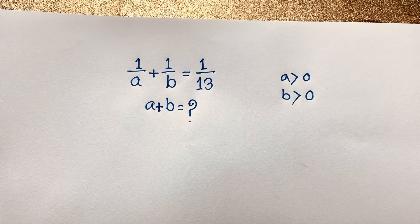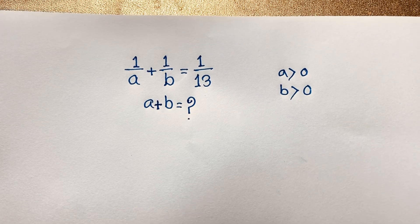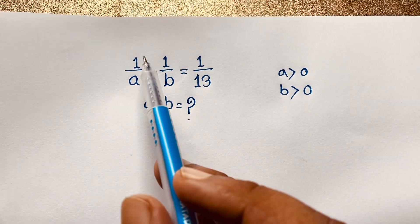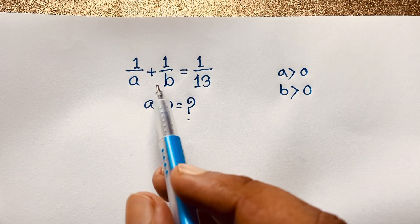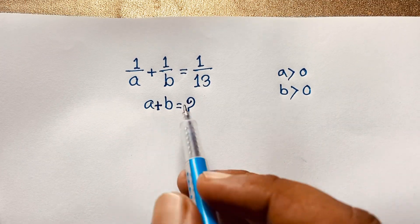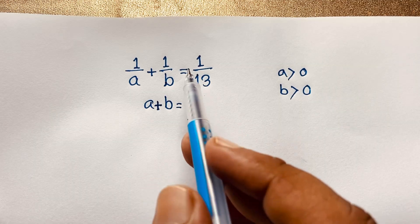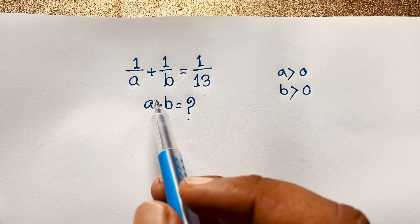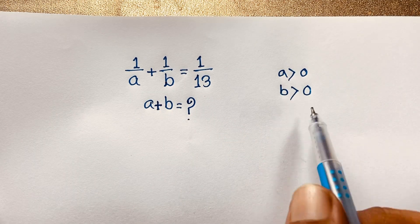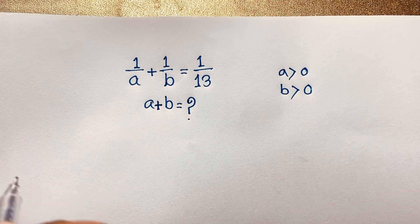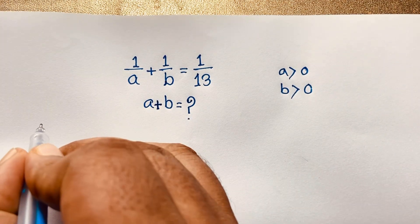Hello everyone, welcome to Russia's Classroom. Today we have solved a nice algebraic problem. Our question: 1 over a plus 1 over b is equal to 1 over 13. Here a and b are greater than 0. We need to find a plus b.